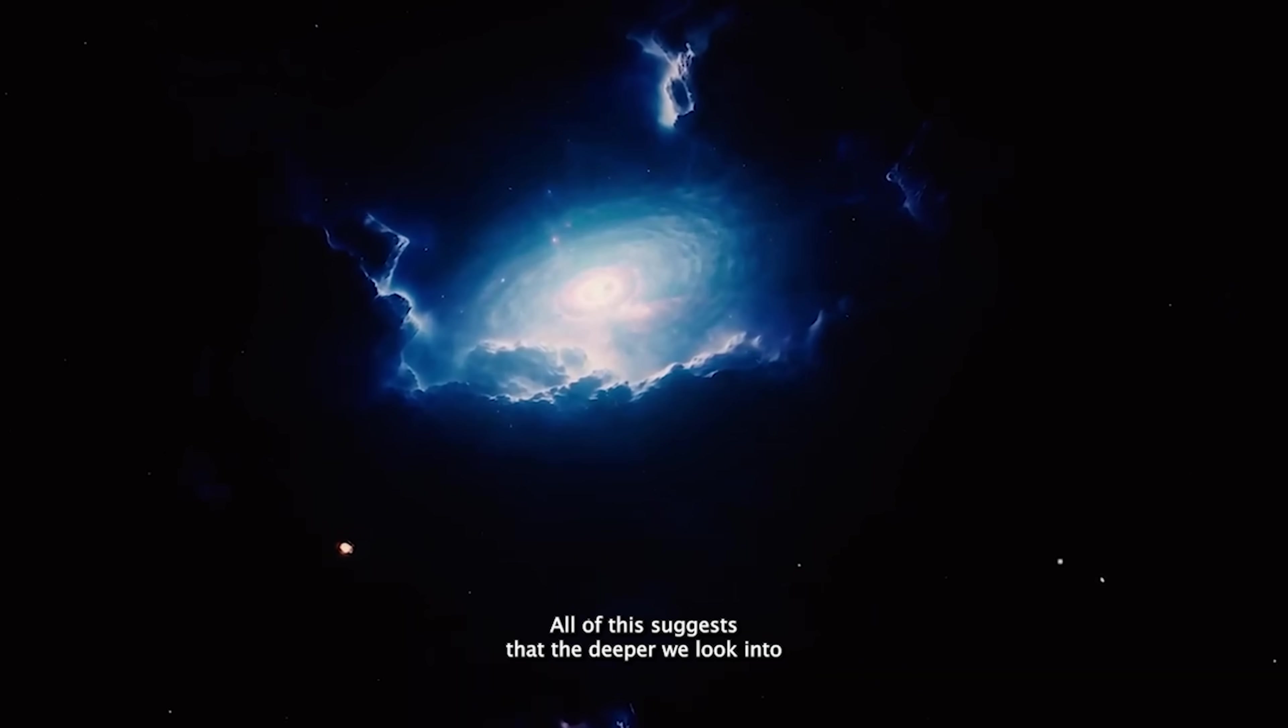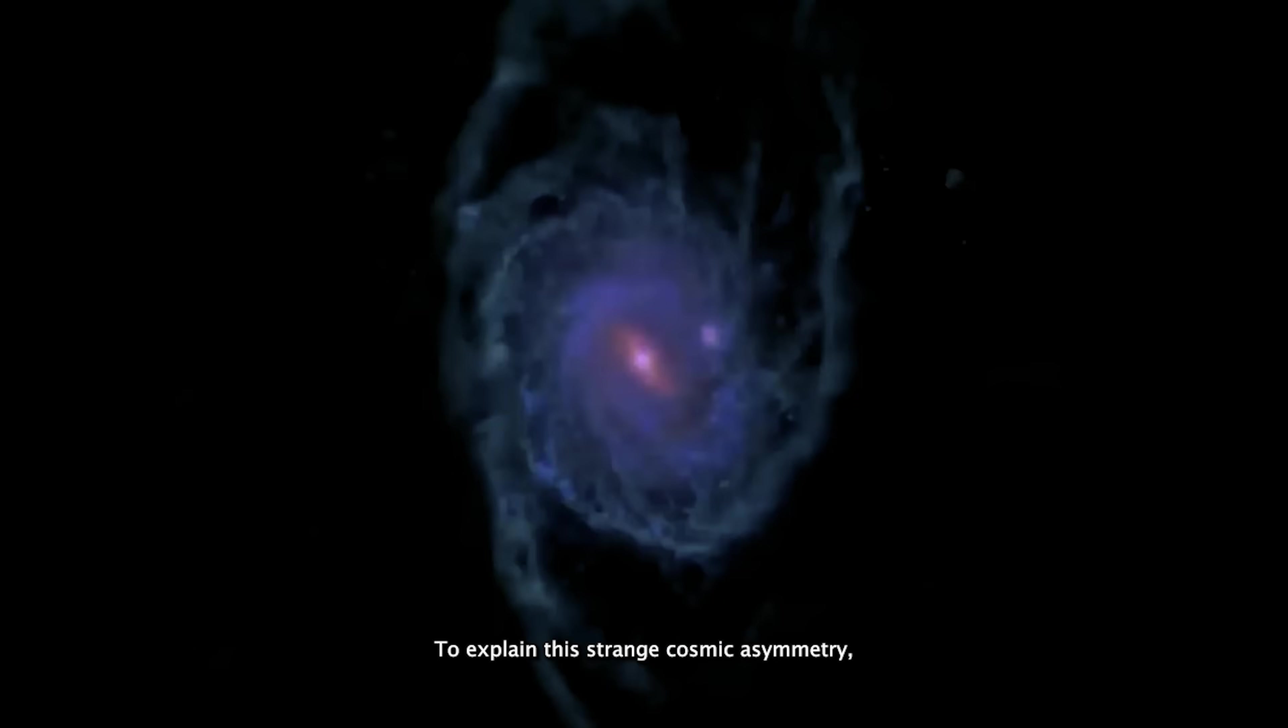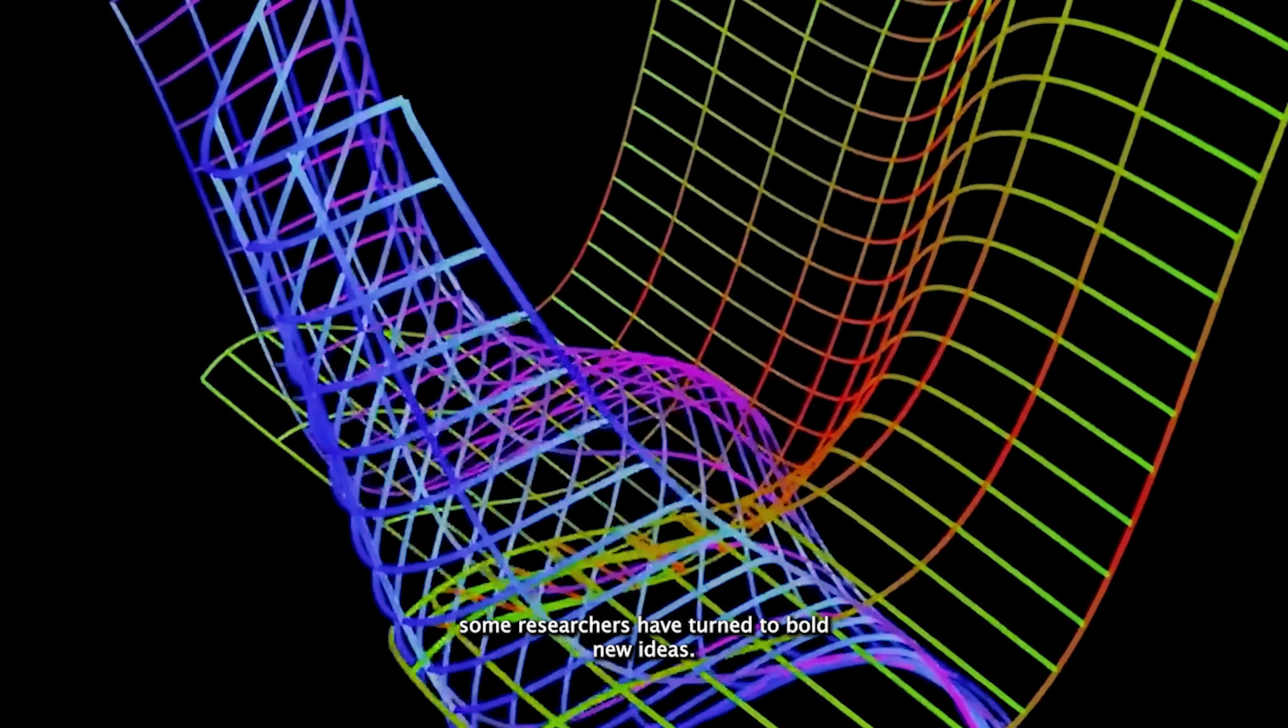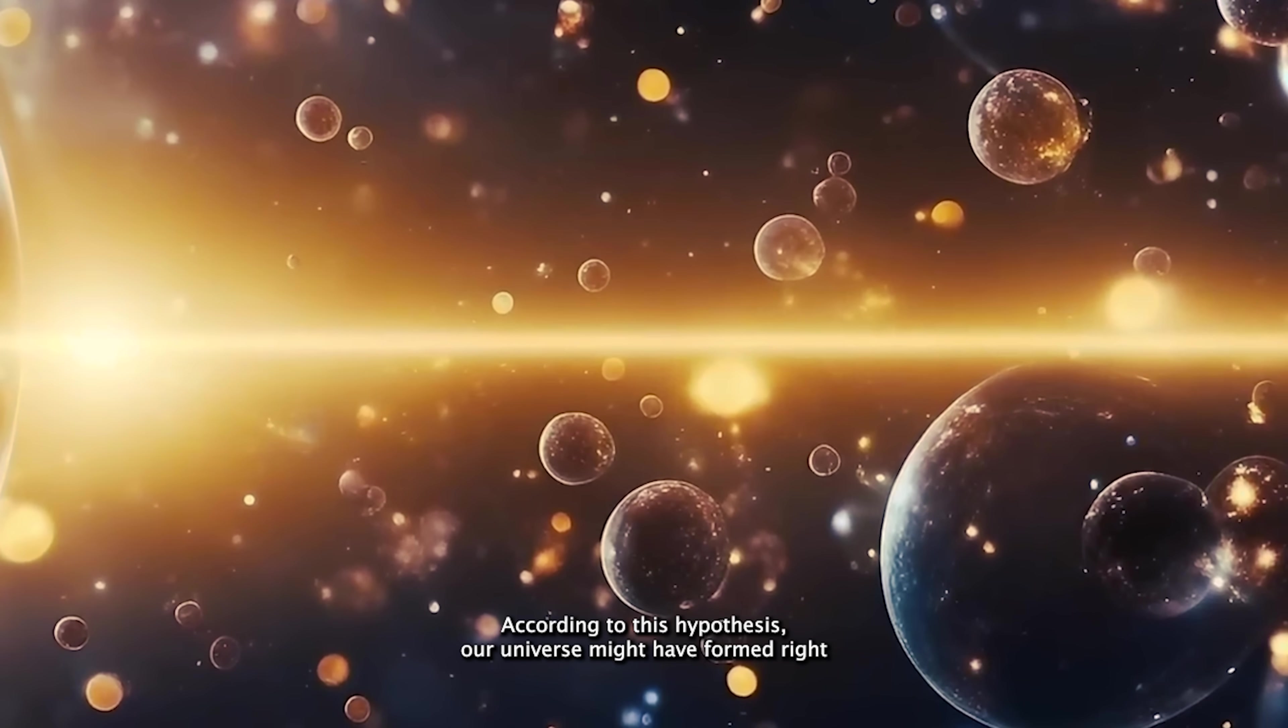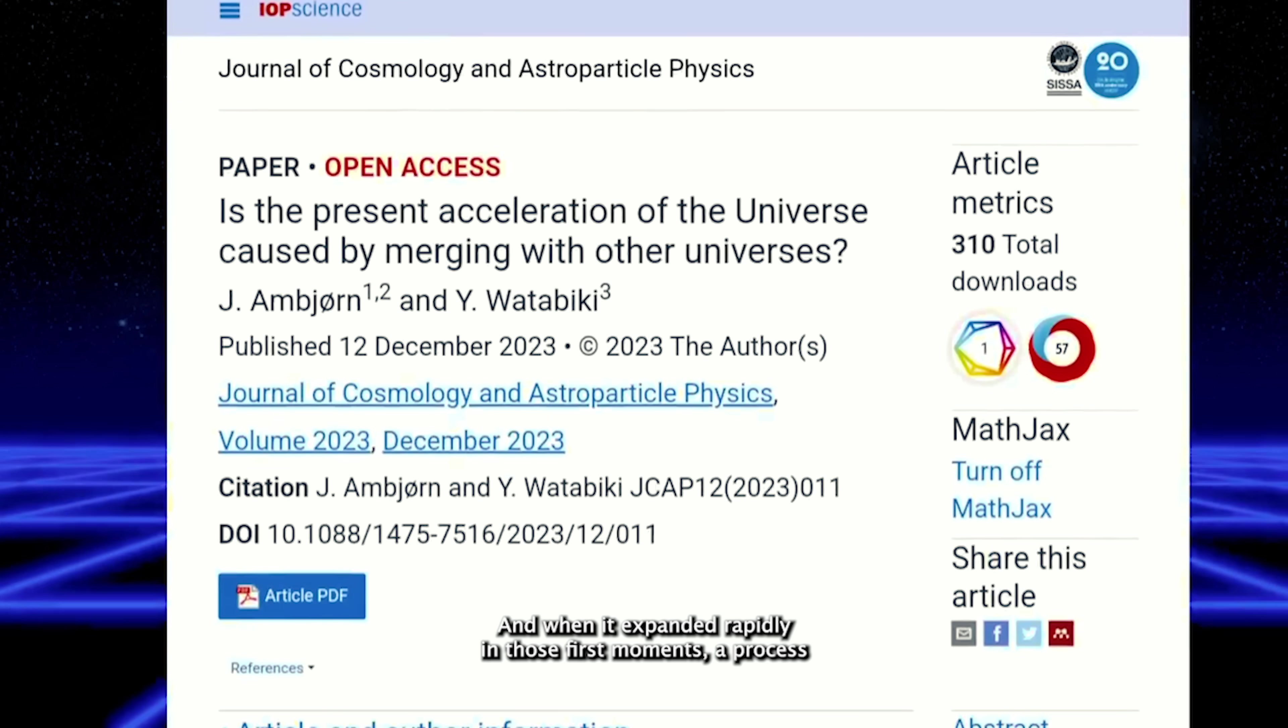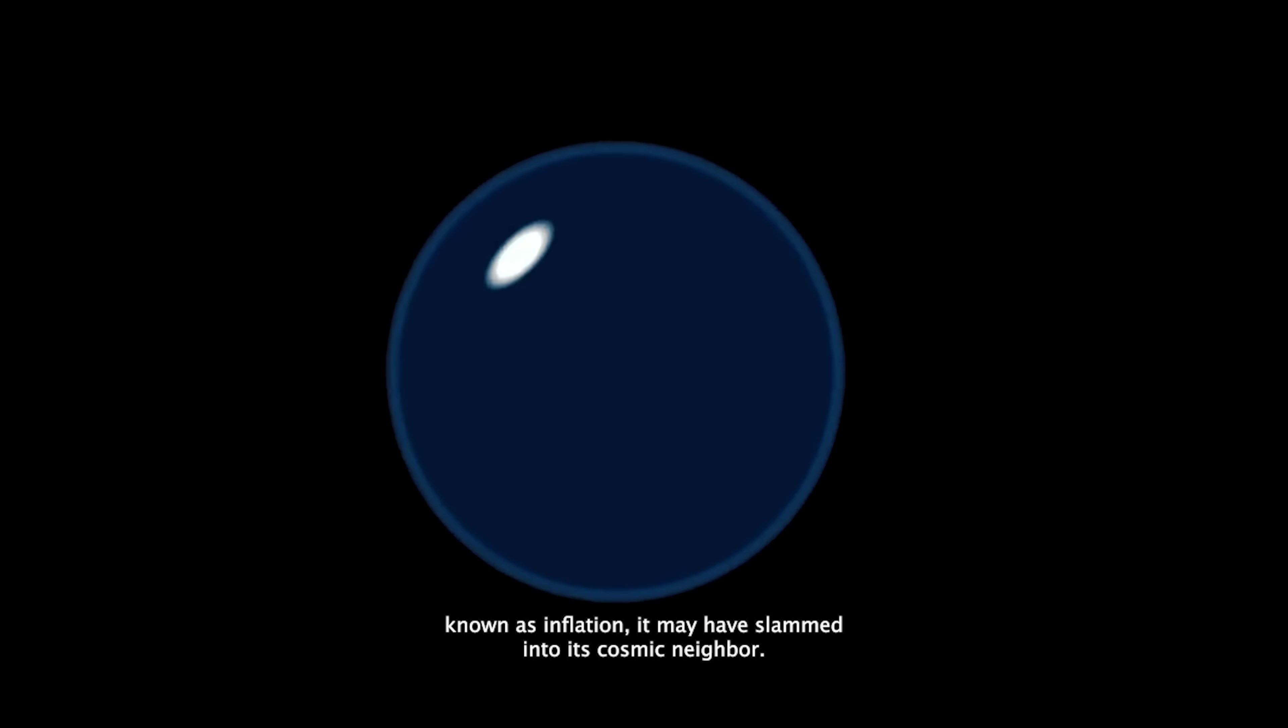All of this suggests that the deeper we look into the cosmos, the more our current theories fall apart. To explain this strange cosmic asymmetry, some researchers have turned to bold new ideas. One of them? The multiverse. According to this hypothesis, our universe might have formed right next to another one. And when it expanded rapidly in those first moments, a process known as inflation, it may have slammed into its cosmic neighbor.